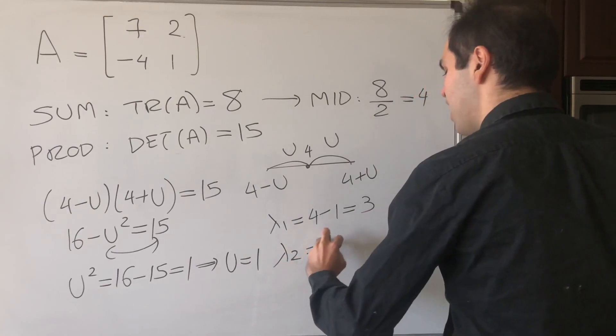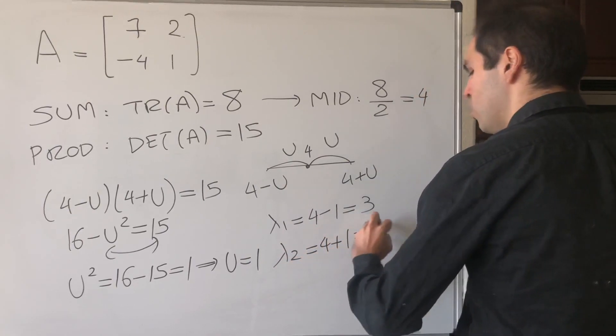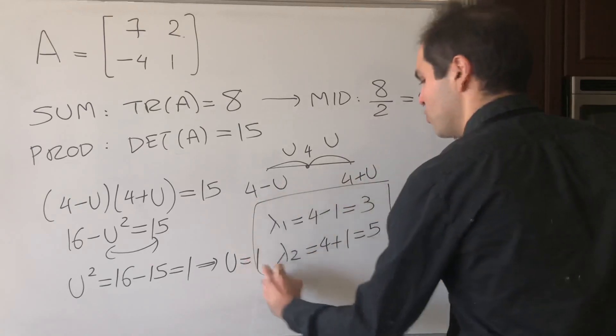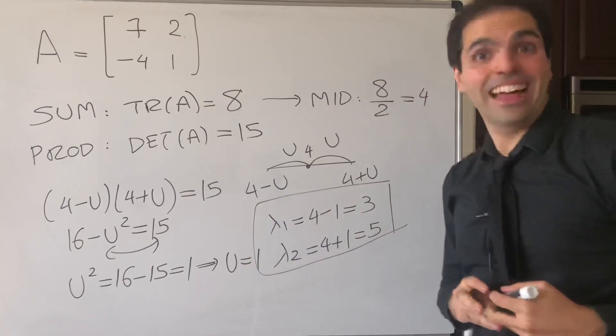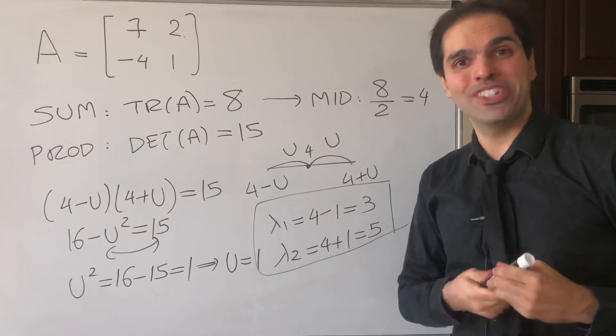And the other eigenvalue is 4 plus u, which is 4 plus 1, which is 5. And that's it. So that's the beauty of Poisson-Lowe's method.